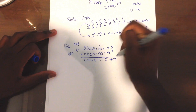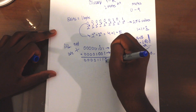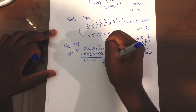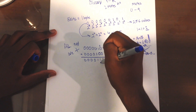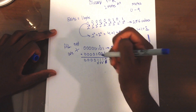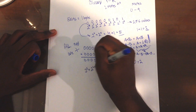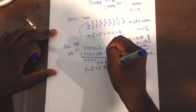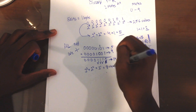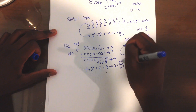We know this should equal 14, so let's verify. We do not add anything at 2 to the 0. We do add something at 2 to the 1, we add 2 to the 2, and we add 2 to the 3. So 2 to the 3 plus 2 to the 2 plus 2 to the 1 equals 8 plus 4 plus 2, which equals 14.